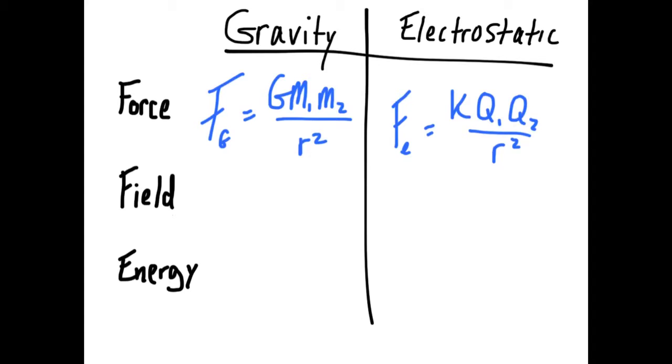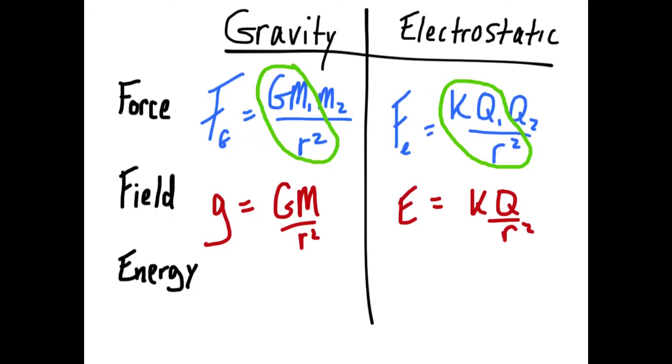We know from Newton's laws that you need two interacting bodies to have a force, but in order to have a field, you just need one body. So take away a mass, take away a q, you're left with a field.